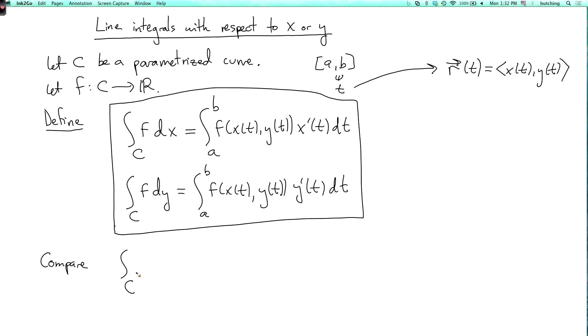So integral over C of f ds is the integral from a to b of f(x(t), y(t)) times the square root of x'(t) squared plus y'(t) squared dt.